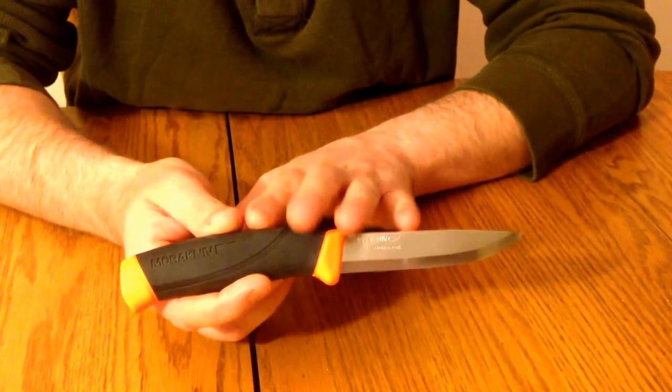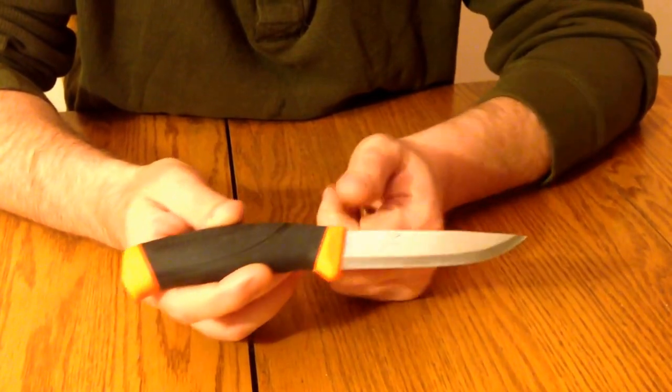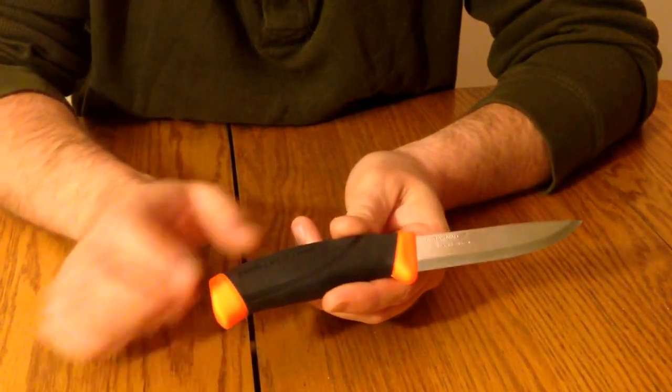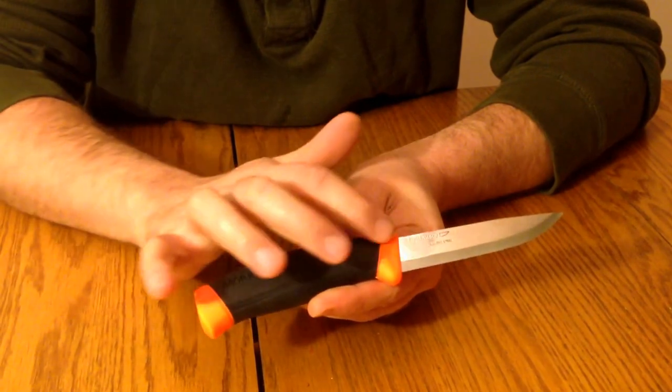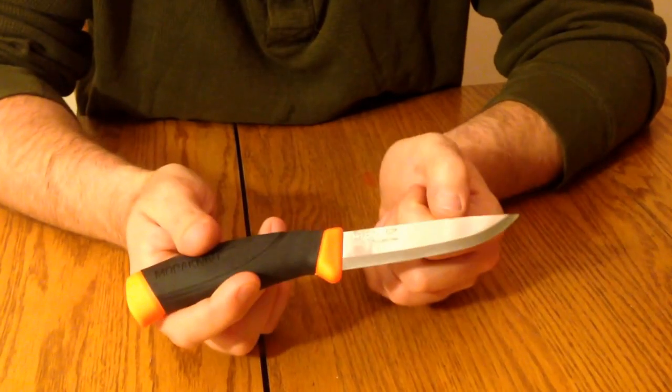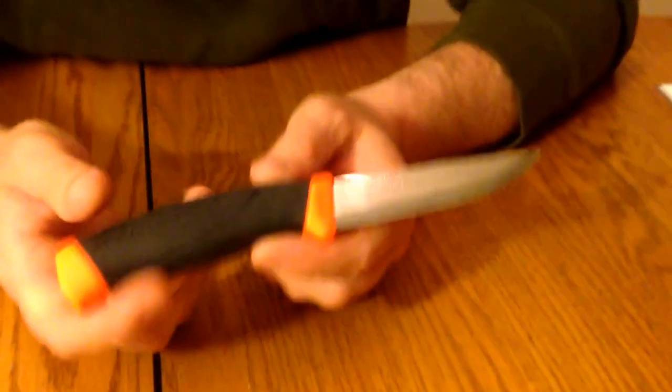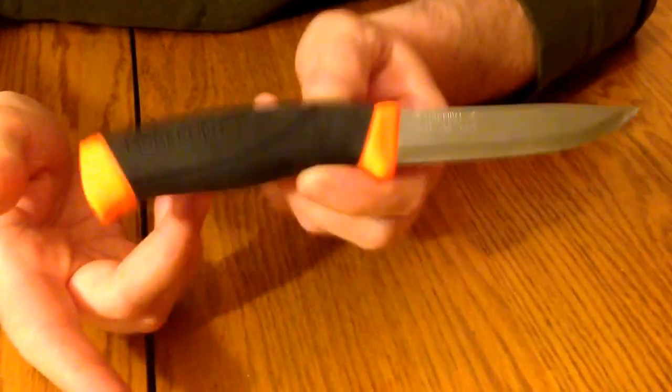It's called the Mora Companion knife in an orange model. The handle is a plastic handle with a rubber grip over mold on it. The steel is a cold rolled Sandvik stainless steel. The knife weighs in at roughly 3.9 ounces overall.